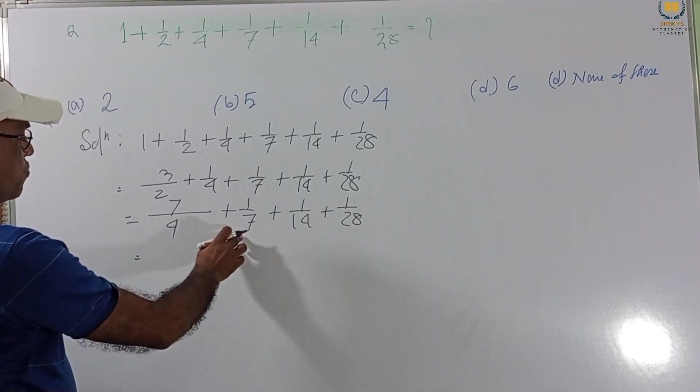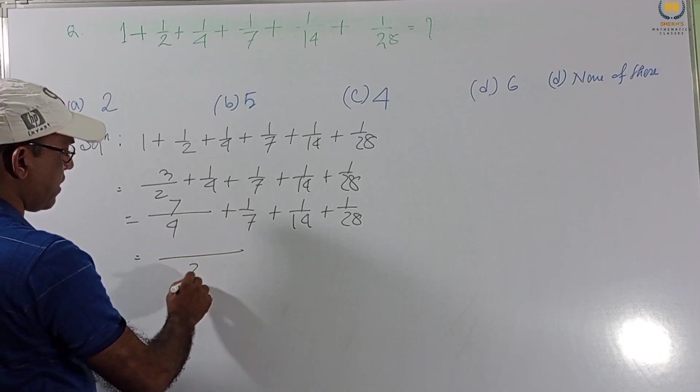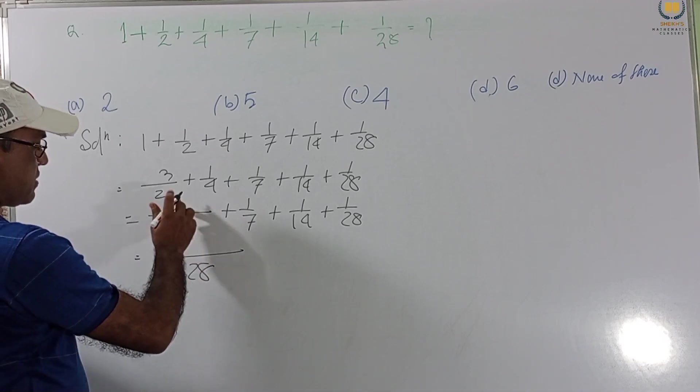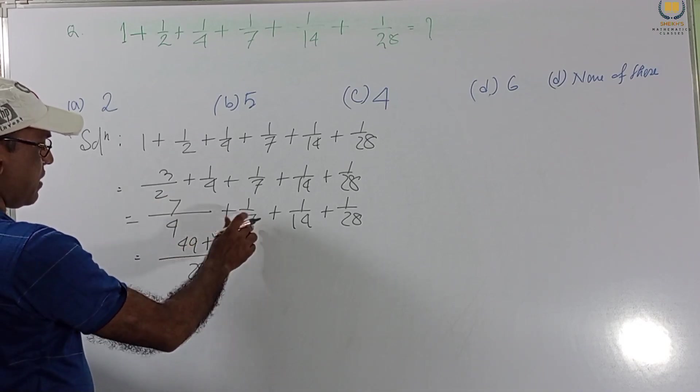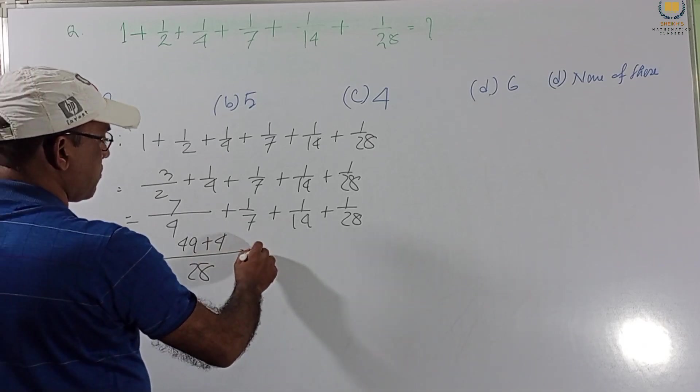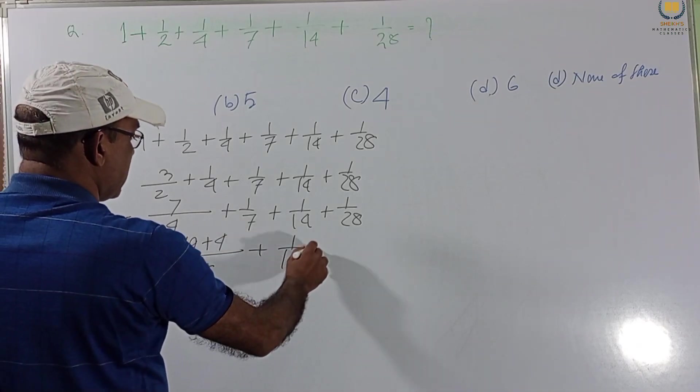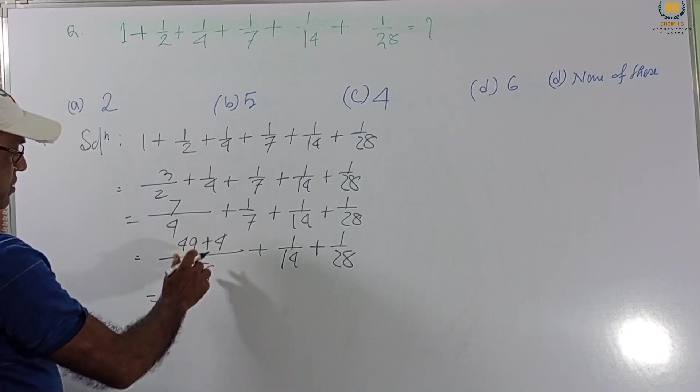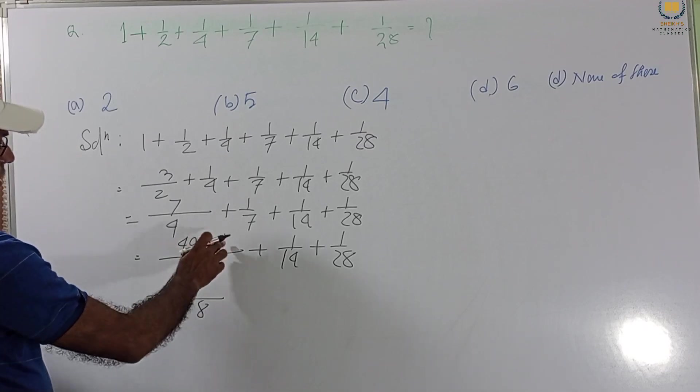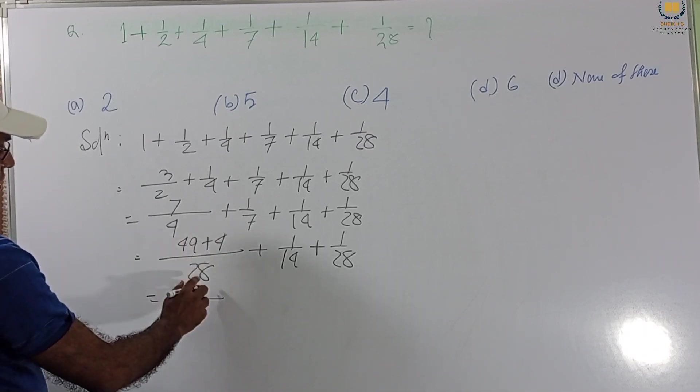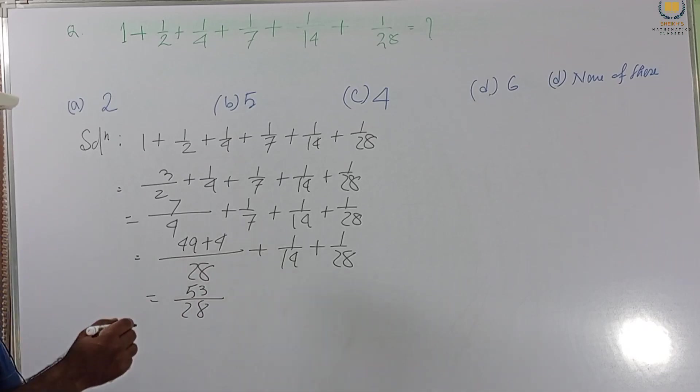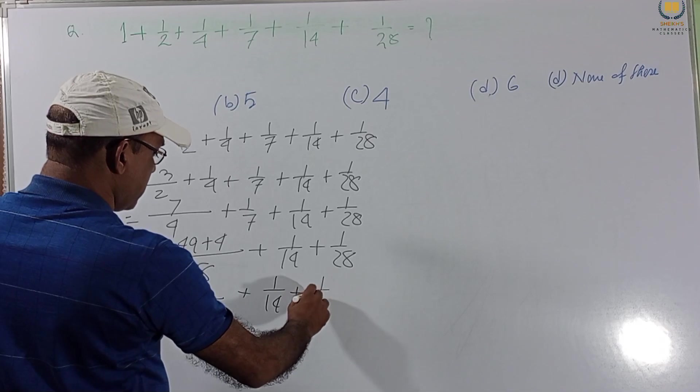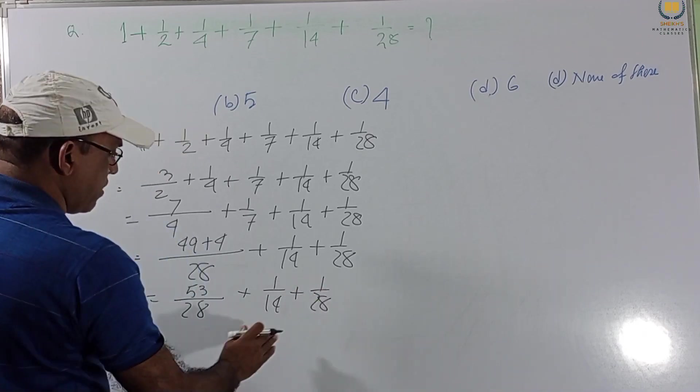And this 2, 28. Our LCM. This is 7 times. Then this is 7, 7s are 49. And this is 4 times. This is 4. Plus 1 by 14. Plus 1 by 28. Then this will be 28. And this is 3, 53. Plus 1 by 14. 1 by 28. 1 by 28.